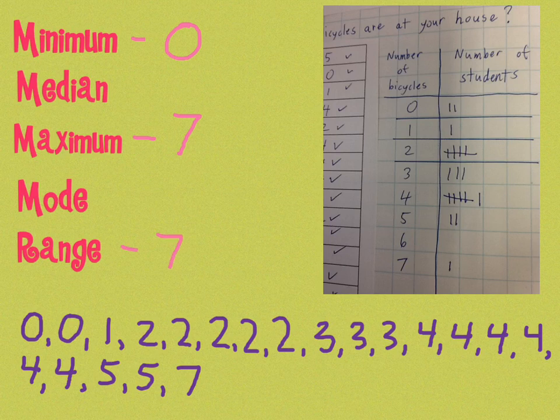Now, the mode, which number happens the most? You can count, but actually my tally chart shows me four happens six times, so it's important. The mode is going to be four, not six, but four, because it happened the most times. It occurred the most. So four is the mode.